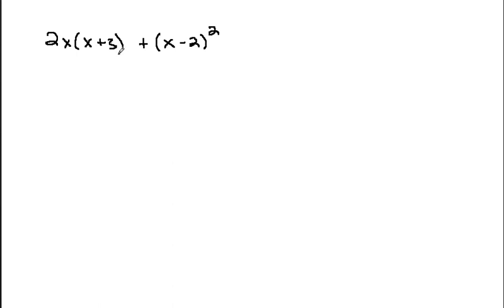So in this parenthesis, I've got an x plus a 3. Those are unlike terms, so there's really nothing to do with them. And the same thing in the other parenthesis, I've got an x minus 2, and they're unlike terms, so I won't simplify them either.